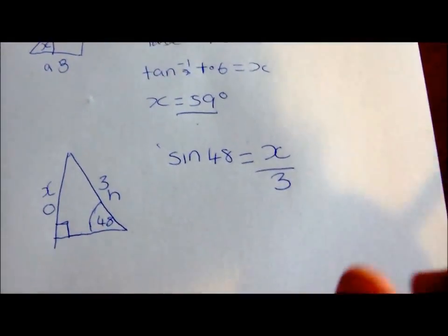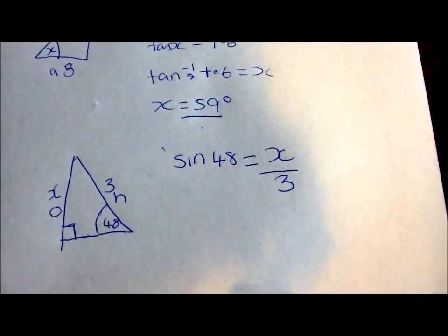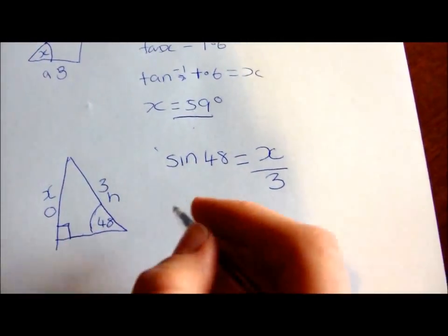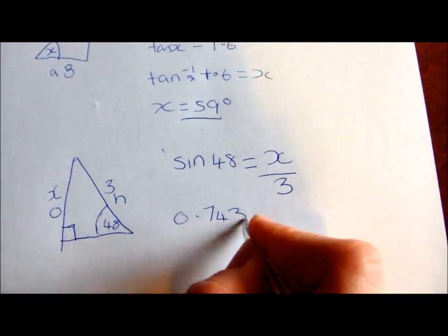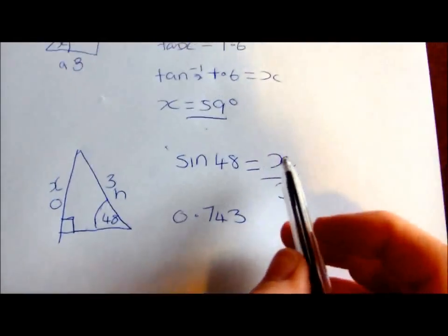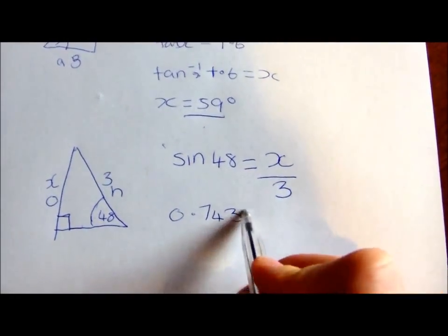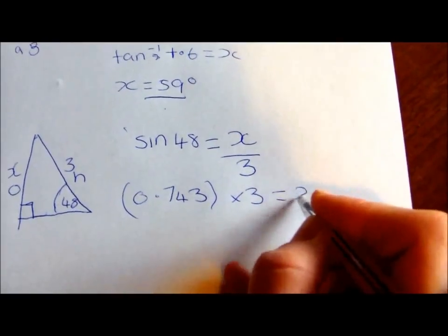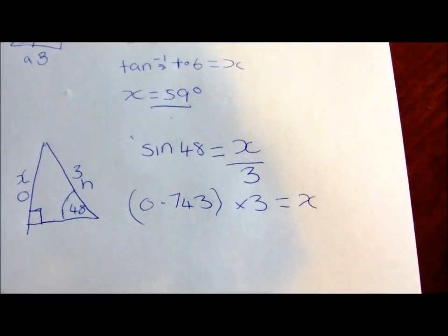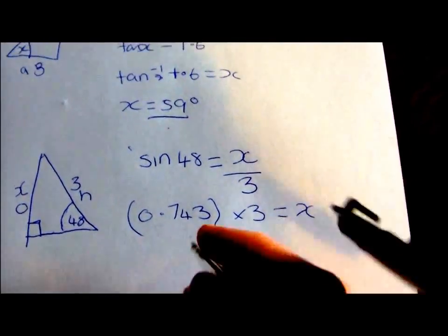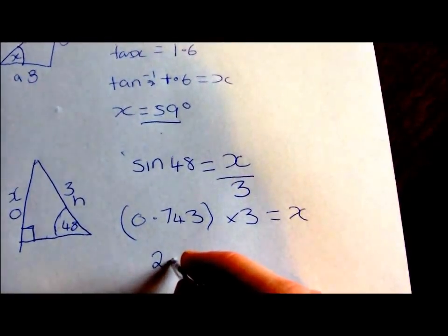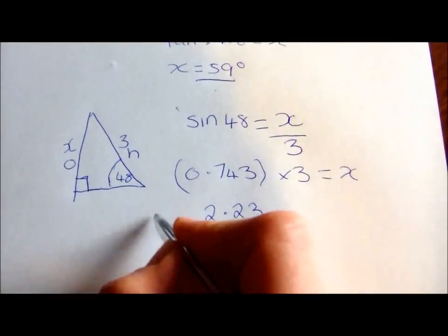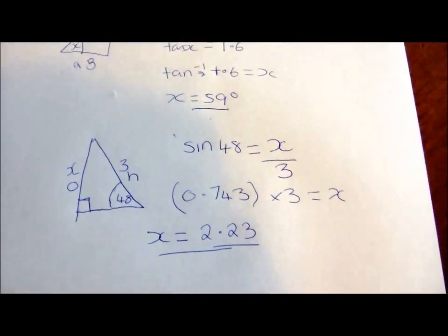When we do sin 48 on a calculator, it gives us 0.743 to 3 decimal places. But that gives x divided by 3, so we have to then times this by 3 to give x. When you times this by 3, you get 2.23 to 2 decimal places. So x in this case would be 2.23.